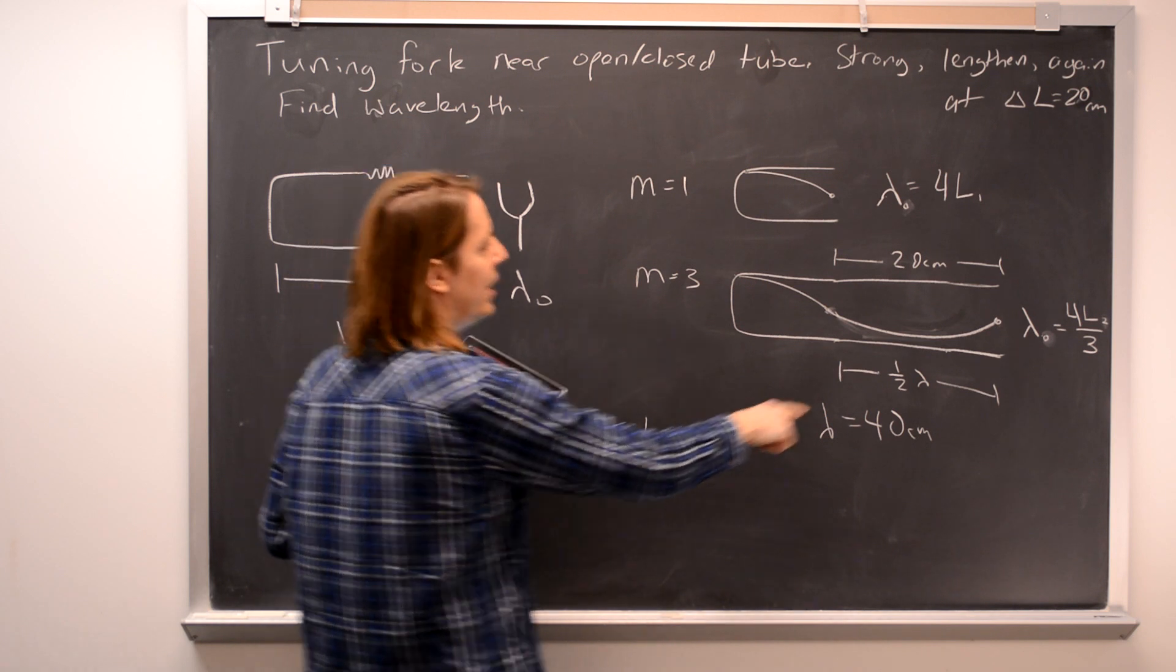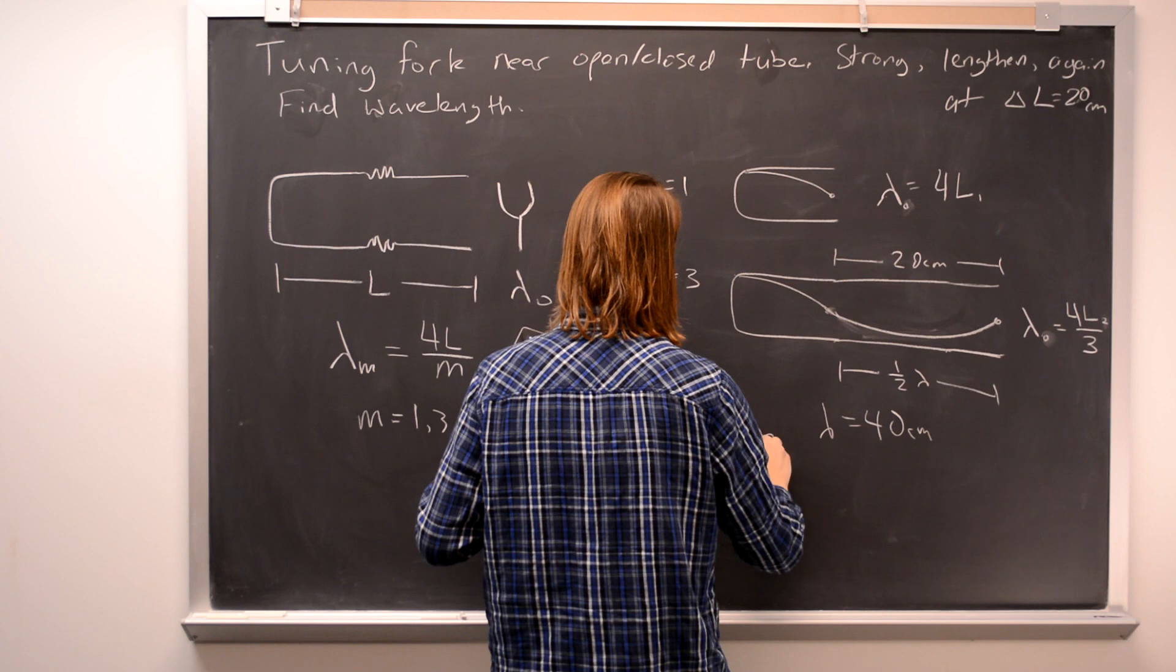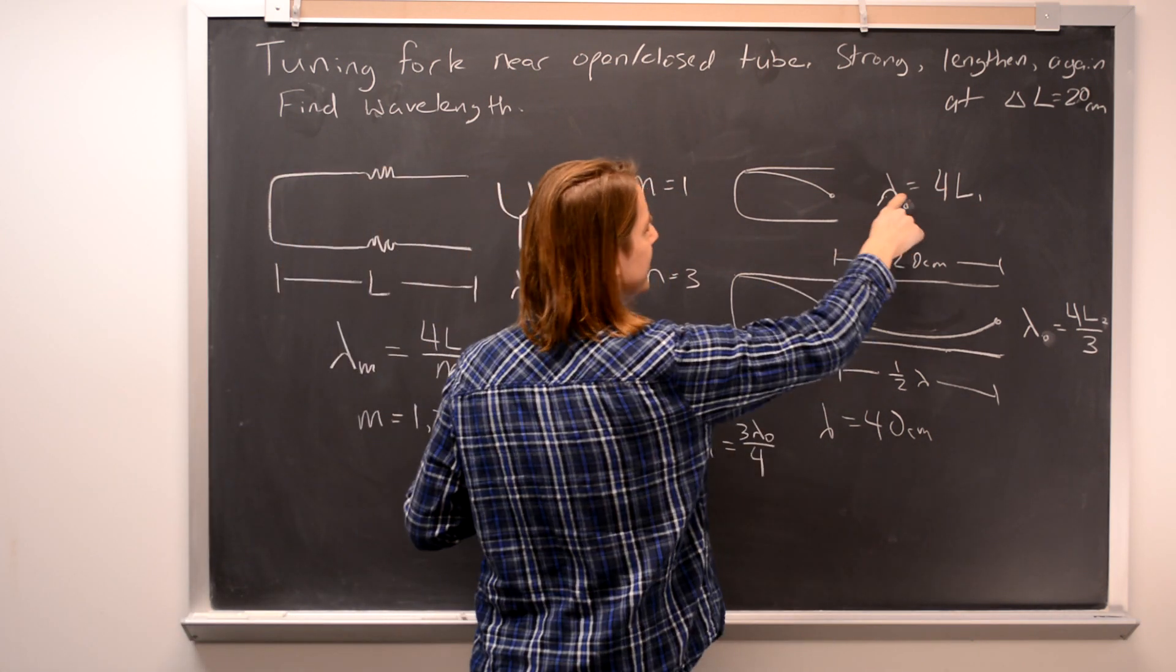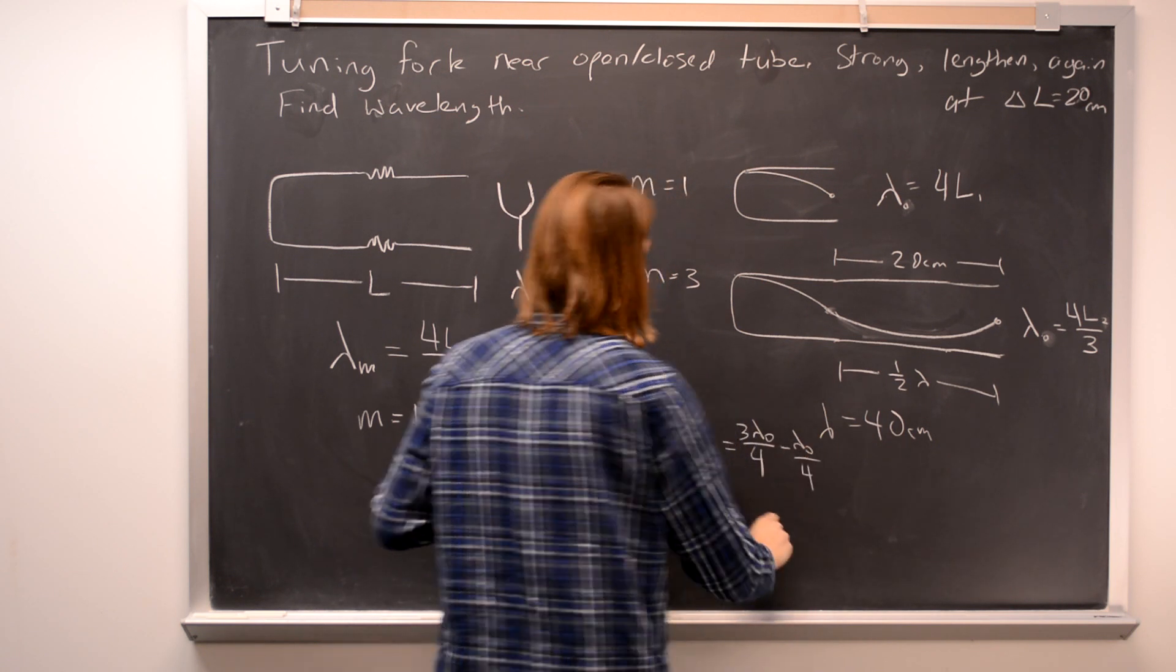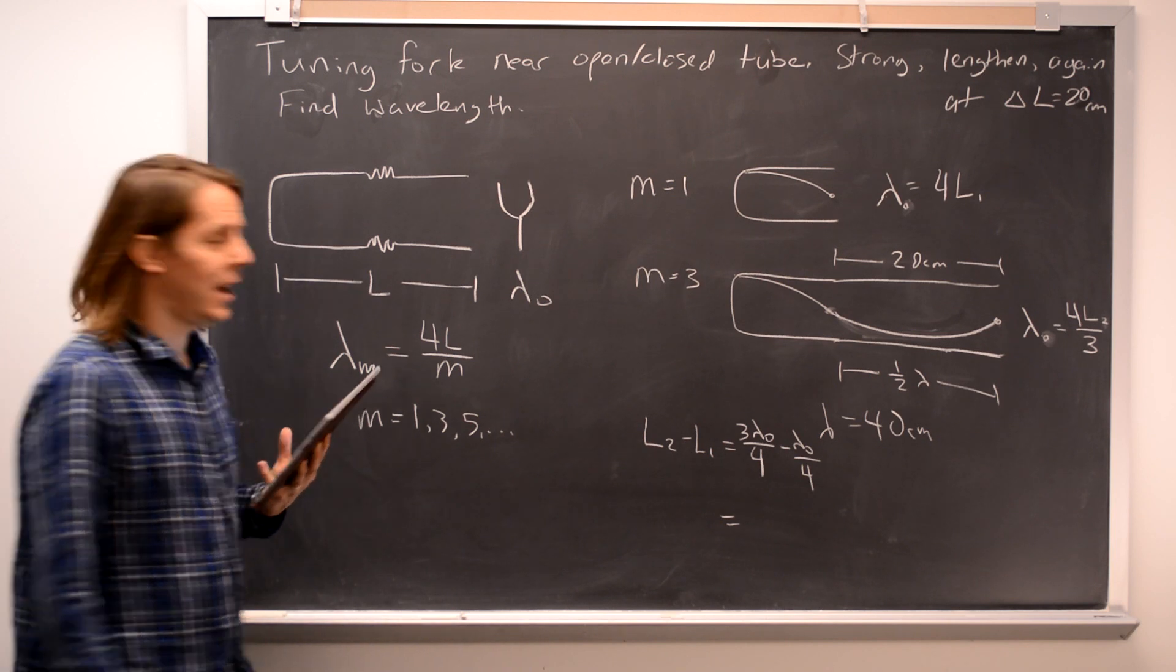Let's solve for that. L2, this is 3 lambda naught over 4. Right? And then minus, what is this? This is lambda naught over 4. So 3 minus 1 is 2 lambda naught over 4, a half lambda.